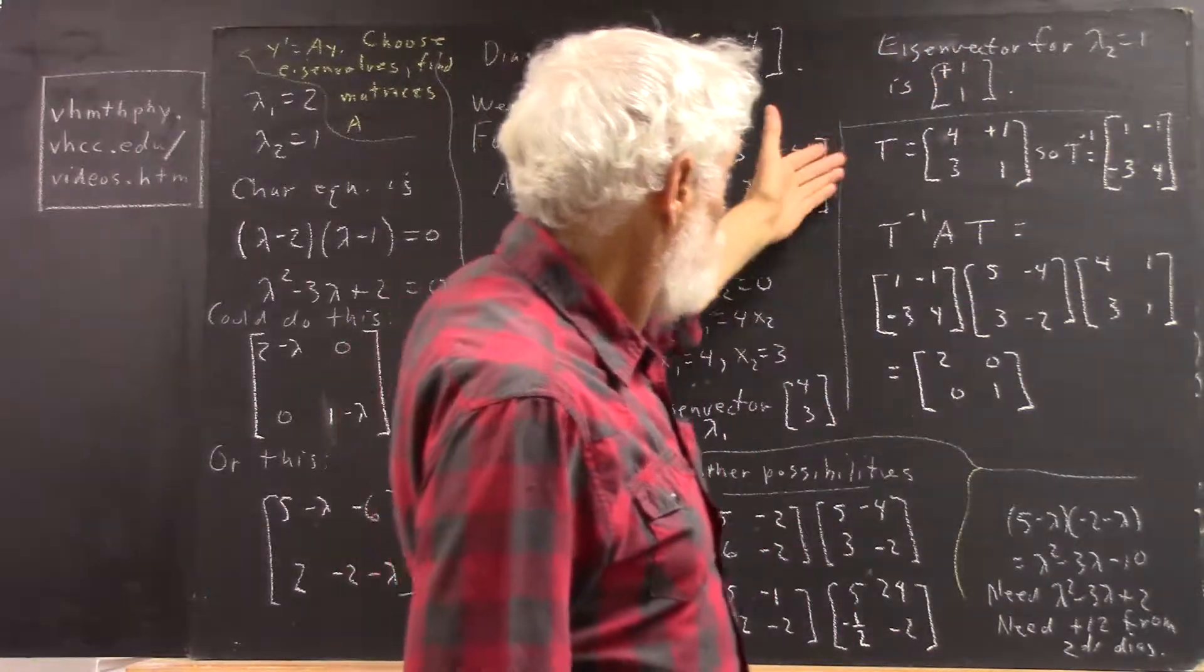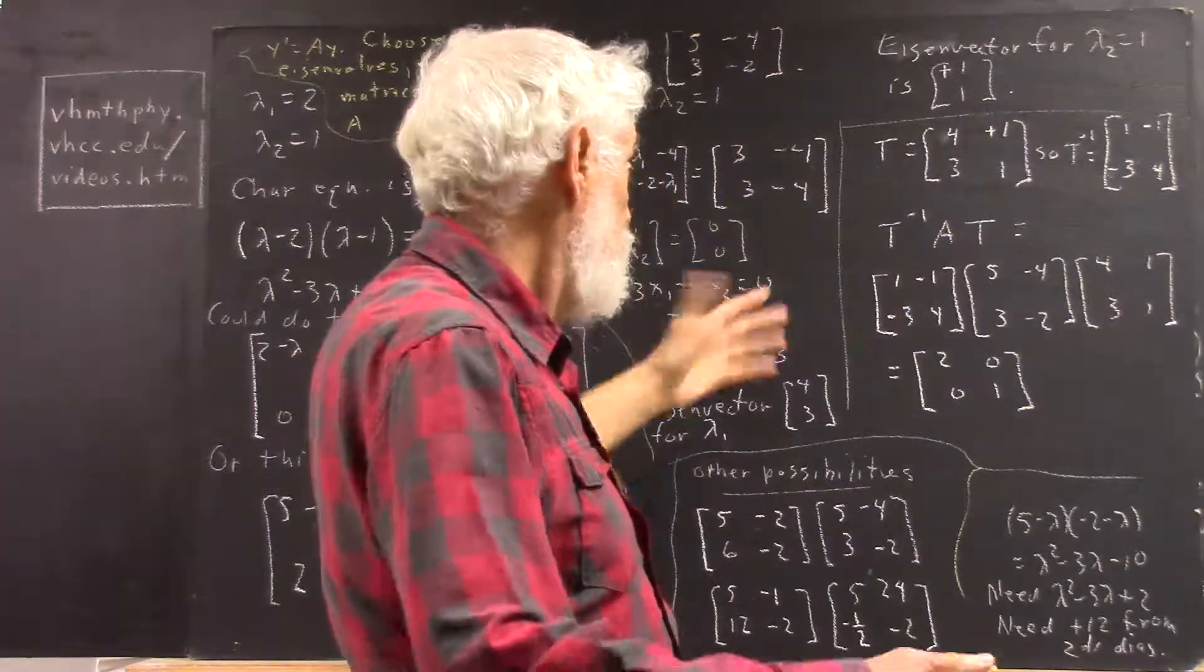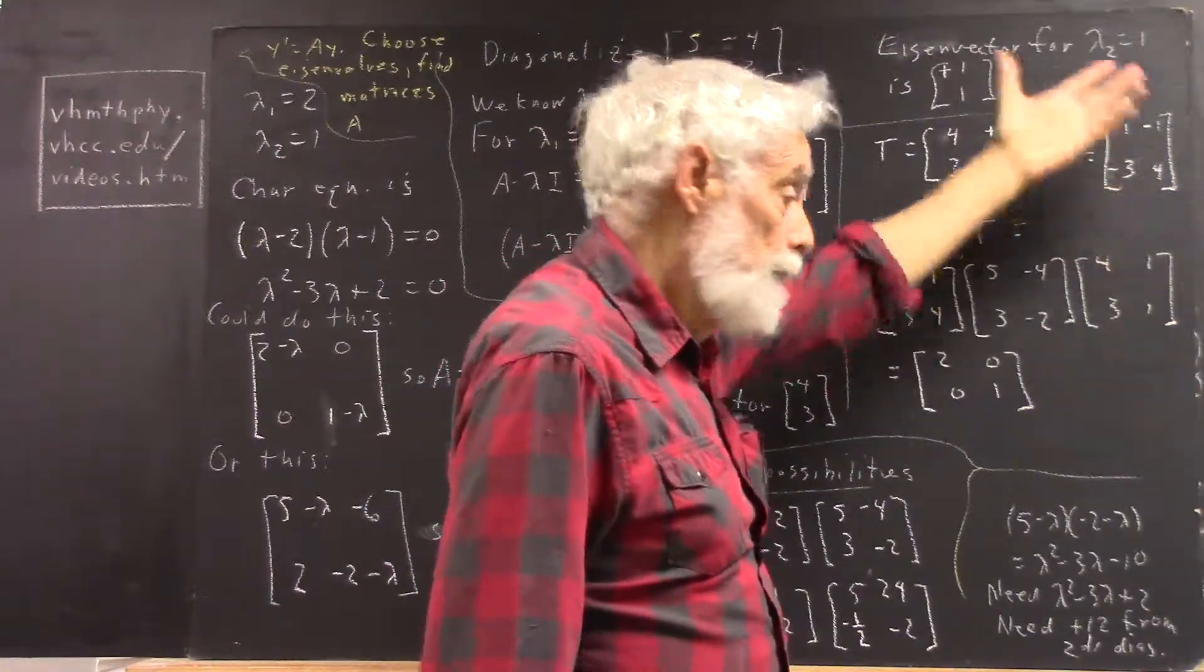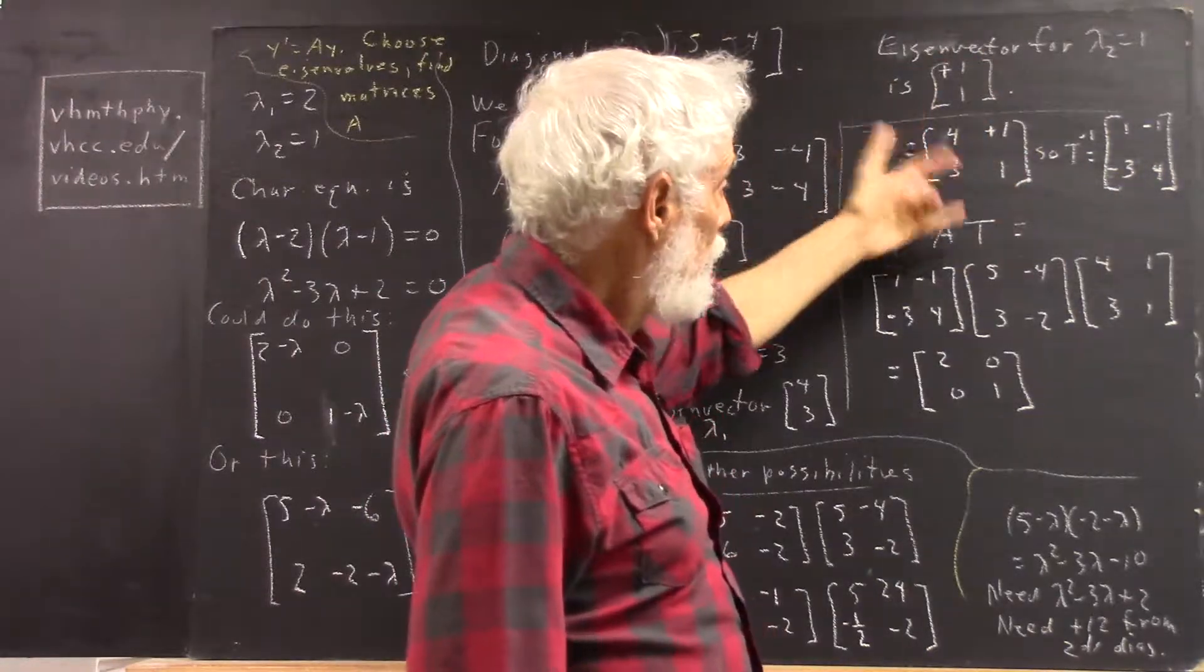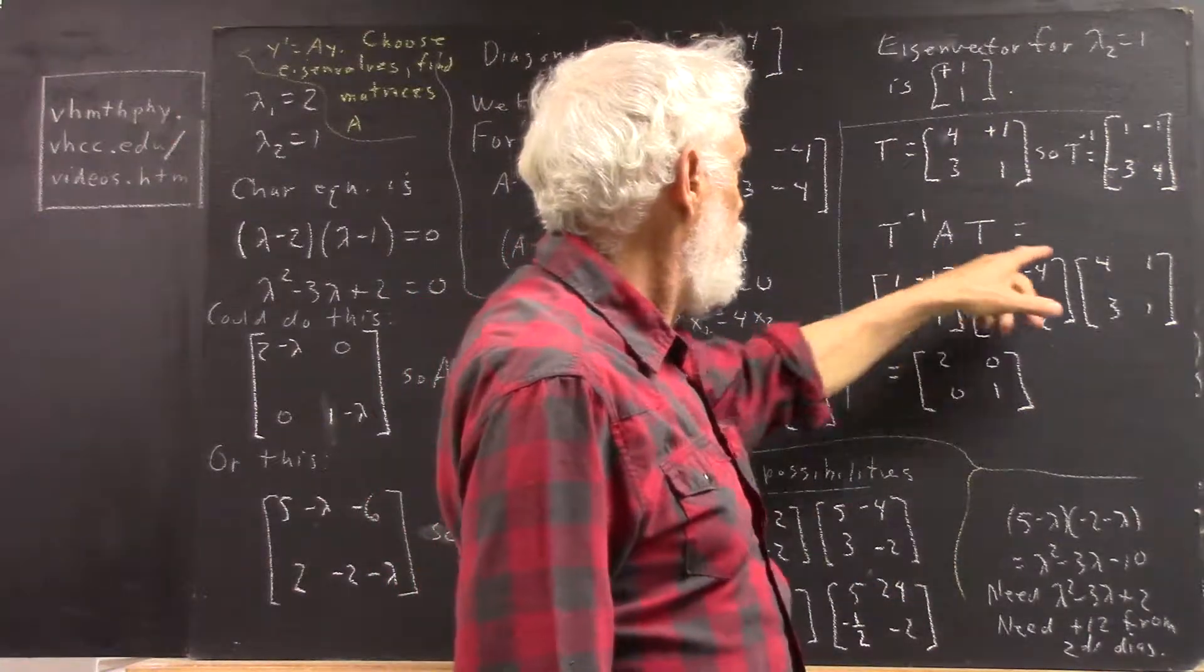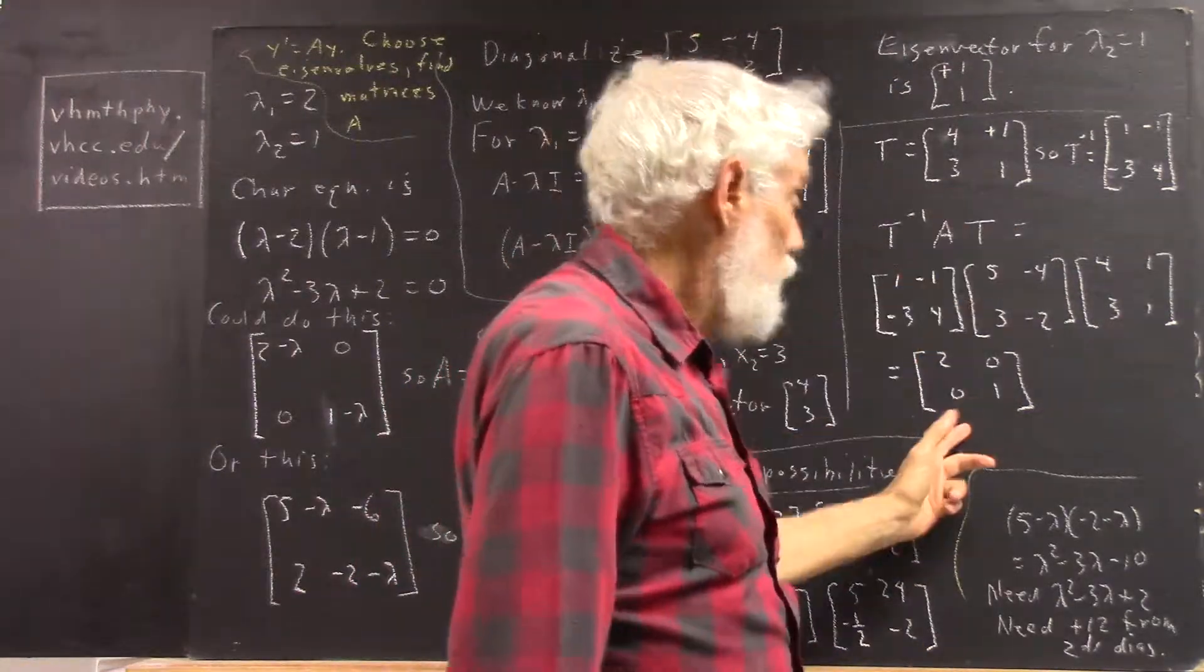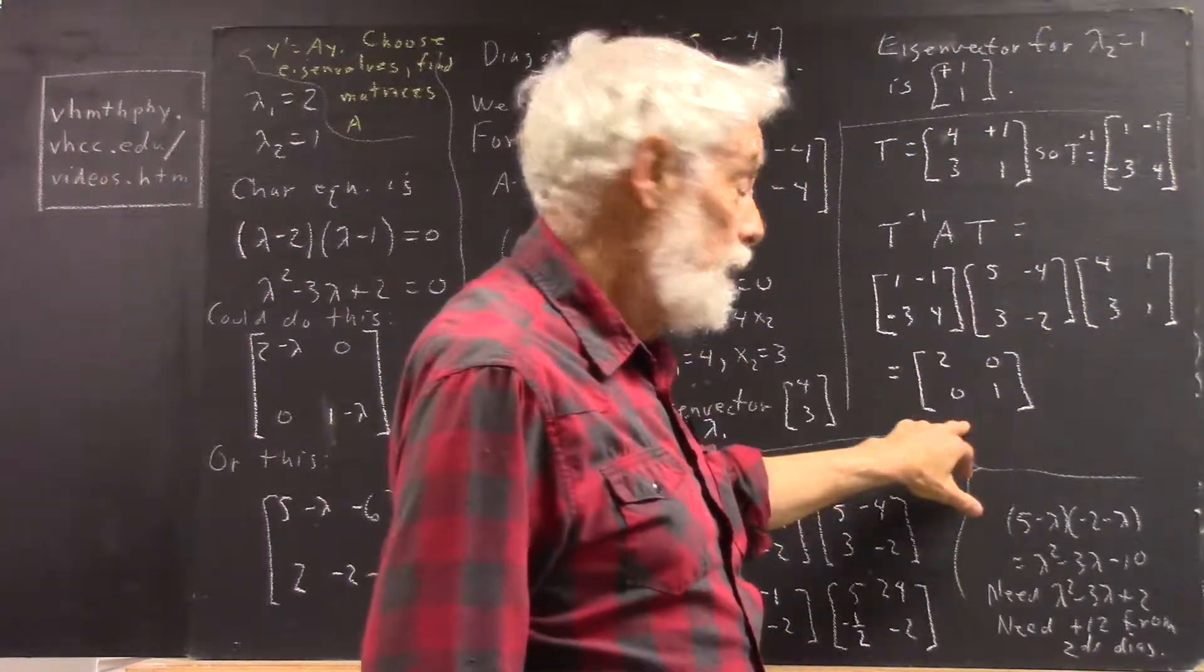Well, that gives us our similarity transformation. Well, the T matrix for our similarity transformation, just this eigenvector and this eigenvector. The inverse, well, we do the inverse, we flip the diagonal, flip the main diagonal, and make the secondary diagonal negative. And then we do our T inverse AT. Well, I didn't actually multiply it out. I went on faith. I know that this has to be this. So I know if I wrote these down correctly, and if you multiply them out, it gives you this.